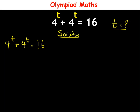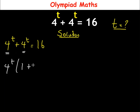Looking at this, we have a common factor which is 4^t. So we factorize out 4^t. Inside the brackets, if we divide 4^t by 4^t we have 1, then plus if we divide 4^t by 4^t that is also 1.